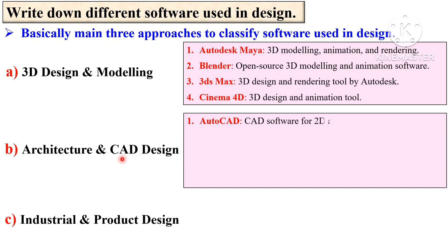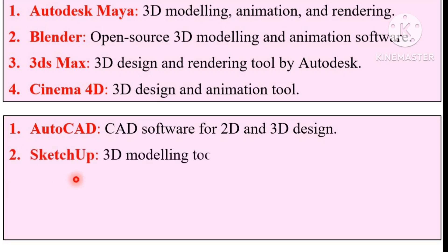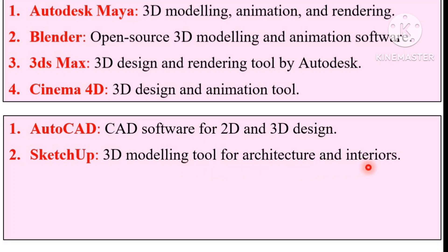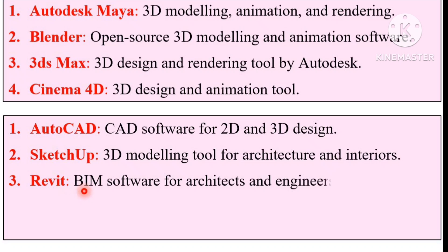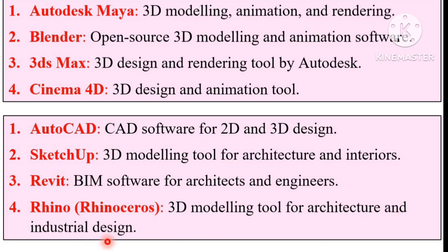The second category is architecture and CAD design. First is AutoCAD, used for CAD software for 2D and 3D design. Second is SketchUp, a 3D modeling tool broadly used for architecture and interiors. Third is Revit, a BIM software for architects and engineers. Fourth is Rhino, sometimes called Rhinoceros, a 3D modeling tool for architecture and industrial design.